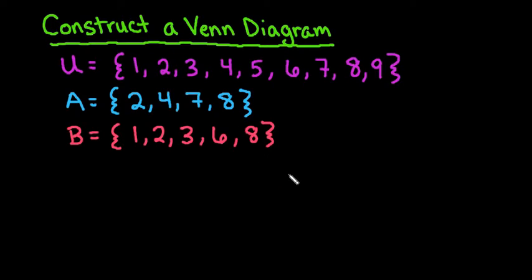Hi! For this video what we're going to do is we're going to construct a Venn diagram for these three sets. U represents the universal set and that's the outside set, the overall set.